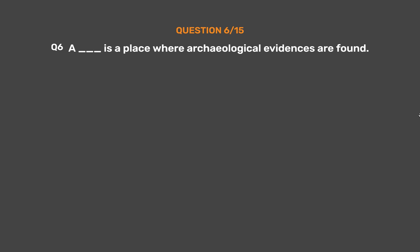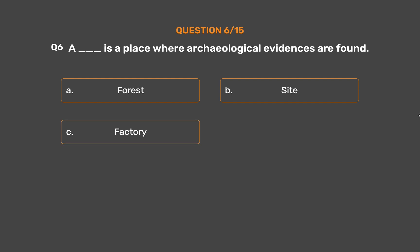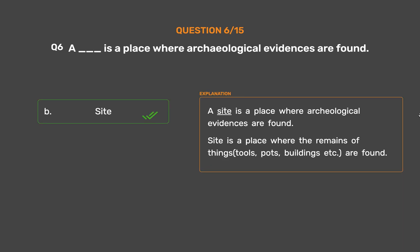Question number six. A blank is a place where archaeological evidences are found. Option A - Forest, Option B - Site, Option C - Factory, Option D - Office. The correct answer is Option B: Site. A site is a place where archaeological evidences are found. A site is a place where the remains of things — tools, pots, buildings, etc. — are found.